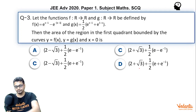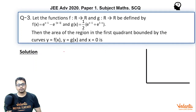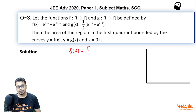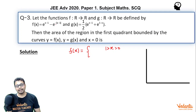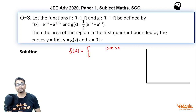Let's solve it. First of all, if you see carefully, what is f(x)? When x is greater than 0 but less than 1, |x−1| would open with a minus sign. So it becomes −(1−x) = x−1. So e^(x−1) − e^(x−1) becomes 0.